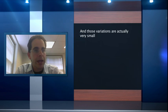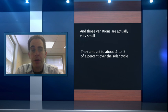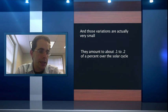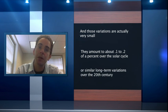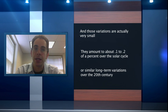And those variations are actually very small. They amount to about 0.1 to 0.2 of a percent over the solar cycle or similar long-term variations over the 20th century.